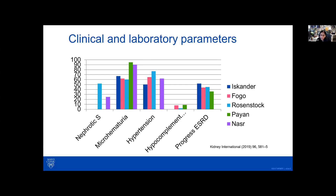Patients who have fibrillary glomerulonephritis present with proteinuria, and it can often be in the nephrotic range. Microhematuria is another frequent laboratory finding. Patients have hypertension; hypocomplementemia is relatively rare, and about 50 percent of patients who have fibrillary glomerulonephritis progress to end-stage renal disease.